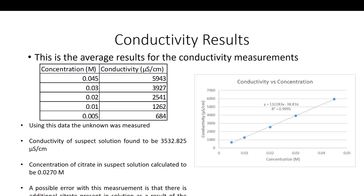Finally, we used that calibration curve to calculate the concentration of our unknown sodium citrate solution. When we took the unknown suspect solution and measured its conductivity, we found that plugging it into the calibration curve gave a concentration of 0.0270 molar.